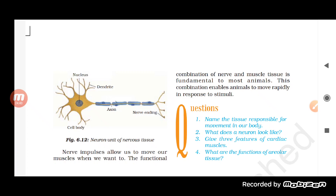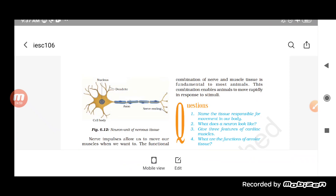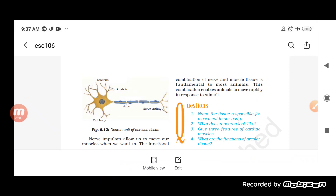So basically, animals — and even plants — are able to respond to stimuli because of this nervous system and nervous tissue. This concludes all the animal tissues, ending with nervous tissue.